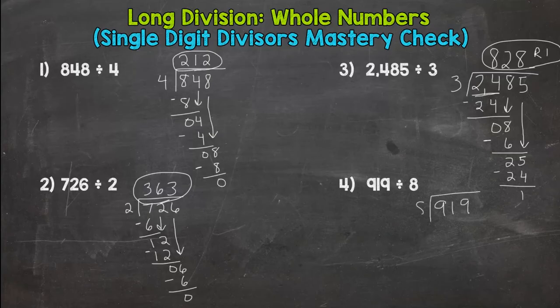And let's do number 4 here. 919 divided by 8. How many groups of 8 are in 9? One. One times 8 is 8. Subtract, we get 1. Bring down the 1. How many groups of 8 out of 11?